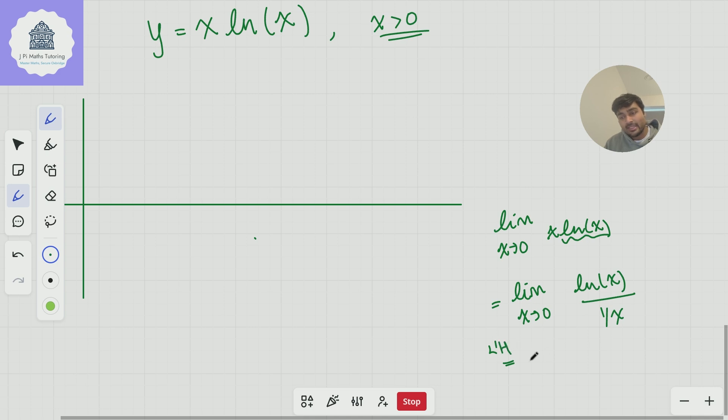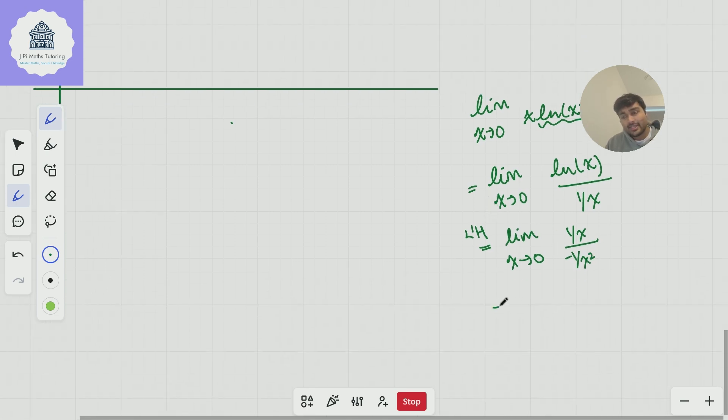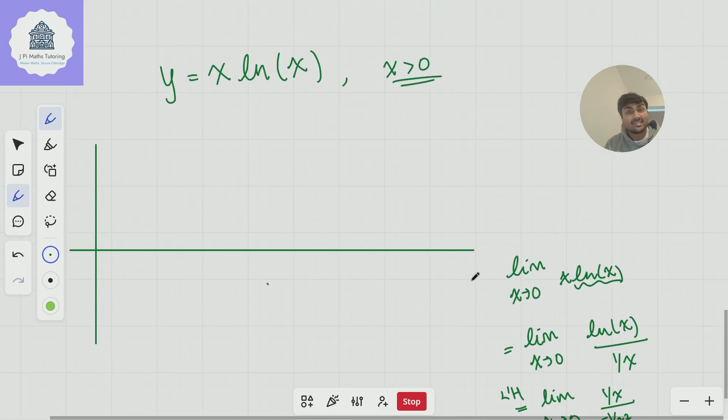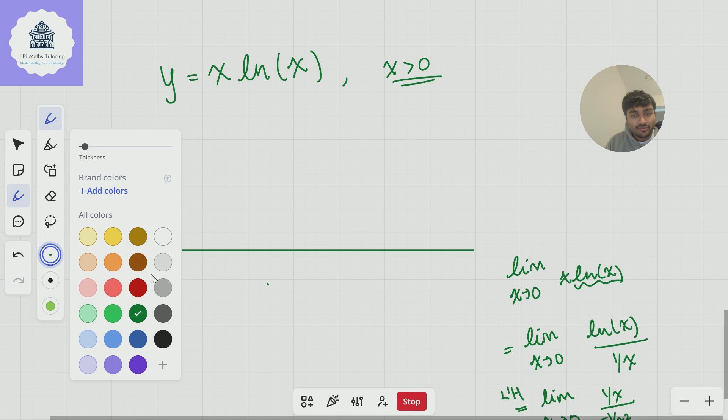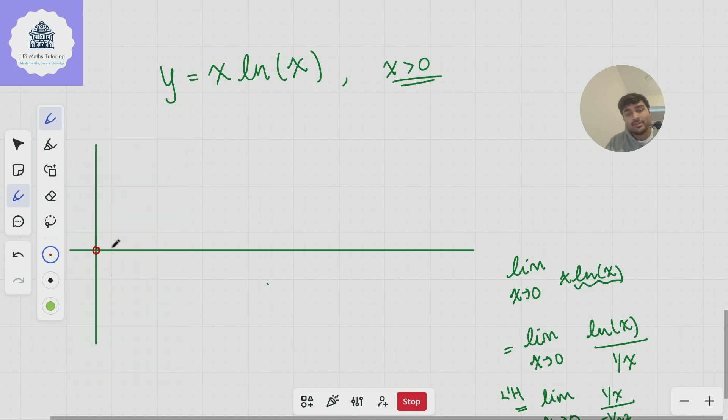I'm going to write this as the limit as x approaches zero of ln(x) over 1/x. And this, according to L'Hopital's rule, is going to be the limit as x approaches zero. If I take the derivative of the numerator, that's 1/x, and the derivative of the denominator, that's negative 1/x². I get this. And if I just simplify this limit, this is the limit as x approaches zero of negative x. But of course, now this is much easier to evaluate. This is simply zero. And in fact, it's going to be zero from the negative side, so it's going to approach zero from underneath. So that means that as x approaches zero, x·ln(x) will approach zero. So my graph is going to, although it doesn't technically have a y-intercept of zero, it's going to approach the origin and it's going to come in from underneath.